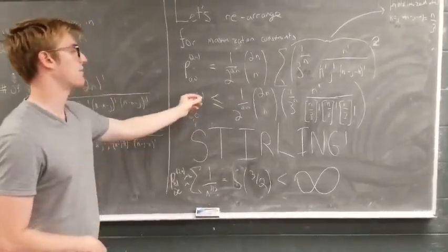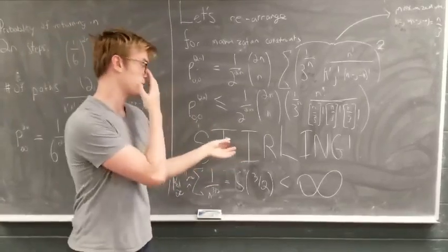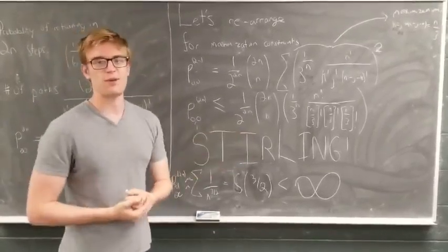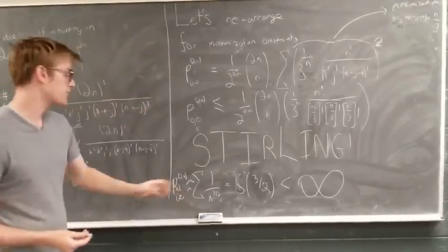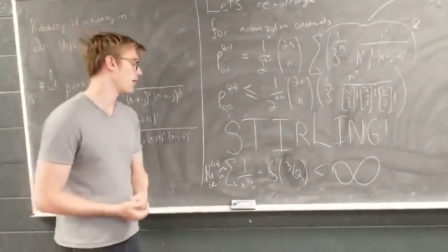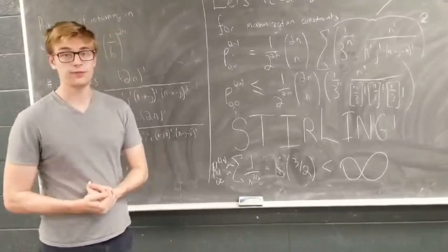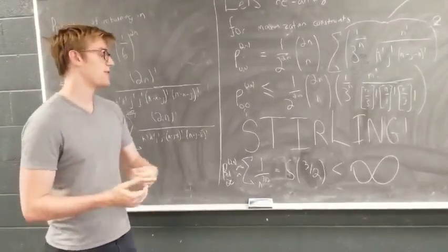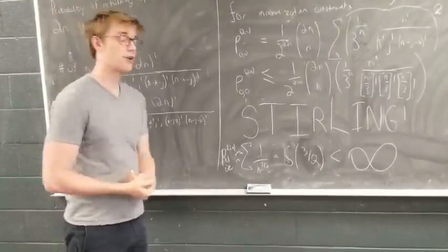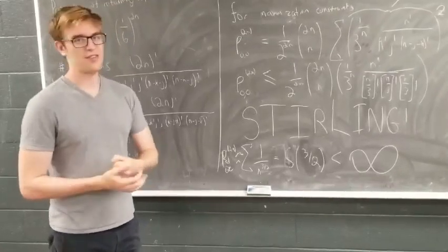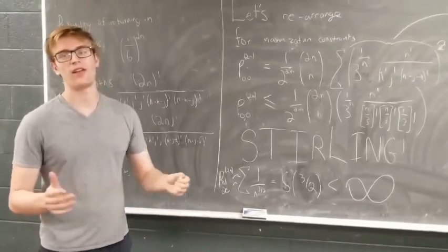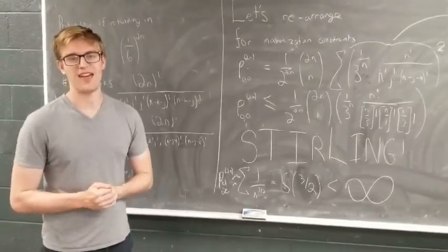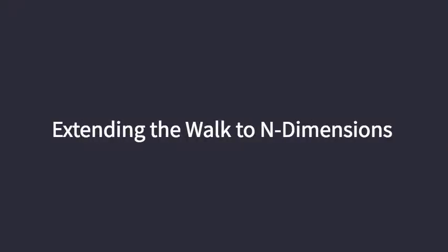As a result, we have a very similar expression to what we've seen in 1 and 2 dimensions. Once we use Stirling to approximate it, we can see that it becomes a summation of 1 over n^{3/2}, and as a result this will actually converge. Therefore it's transient. As a result, Jose the Angel will not be able to return home an infinite number of times, given that he travels for an infinite length of time.